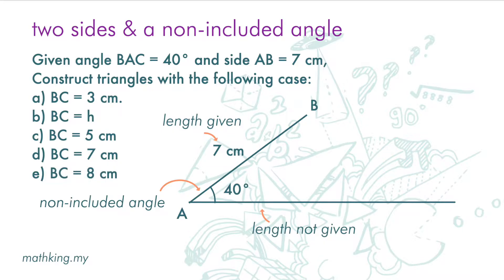So, we can see that ambiguous case only exists when BC is greater than H, but less than AB.